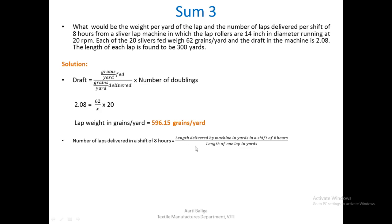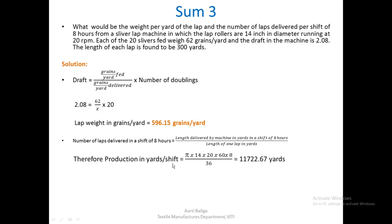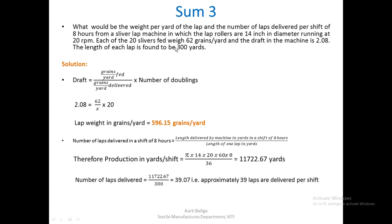To find the number of laps delivered in a shift of 8 hours, we first find the length delivered by the machine in yards per shift: π × d × n gives inches per minute; multiplying by 60 × 8 gives inches per shift; dividing by 36 gives yards per shift. Dividing the total yards per shift by the lap length of 300 yards, we get approximately 39 laps delivered per shift.